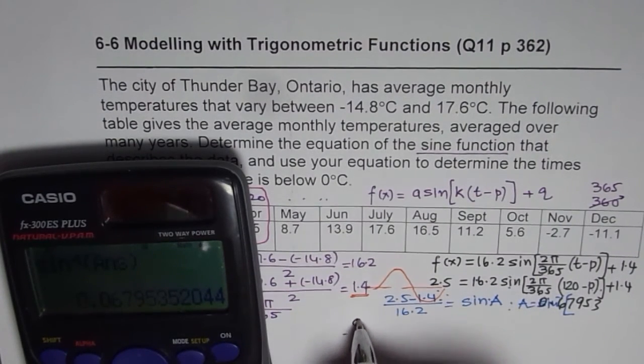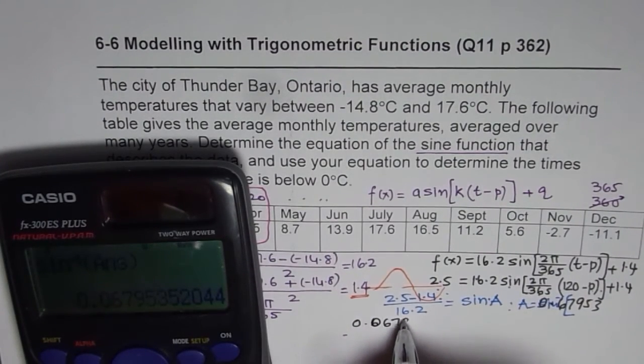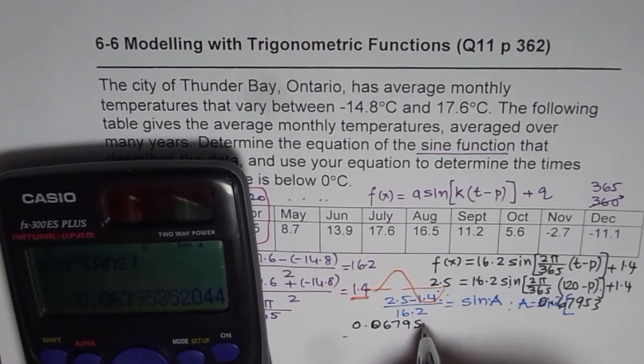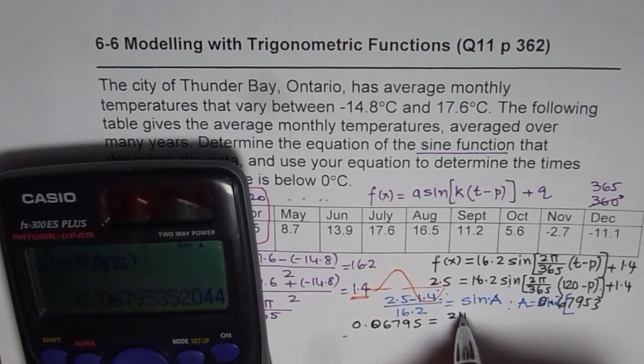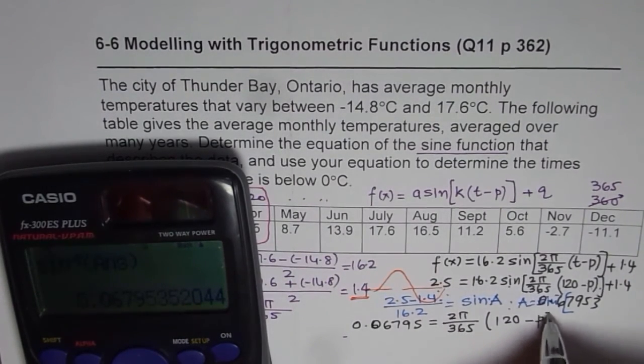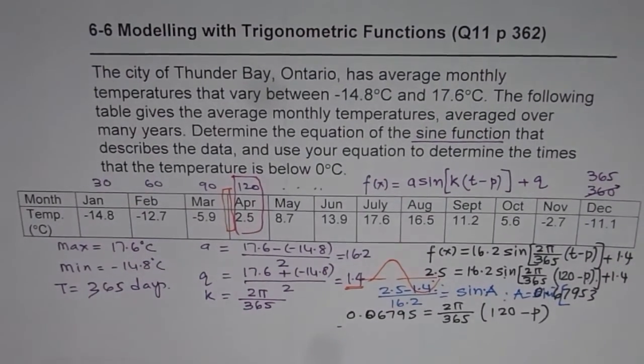So this value of a is actually equals to 2π over 365, 120 minus p. So what we get here is 0.06795 equals to 2π divided by 365 times 120 minus p. I hope you understand that. So from here, let me now push this a bit. We need to now multiply by 365 divided by 2π. Bring p here, take away from 120.